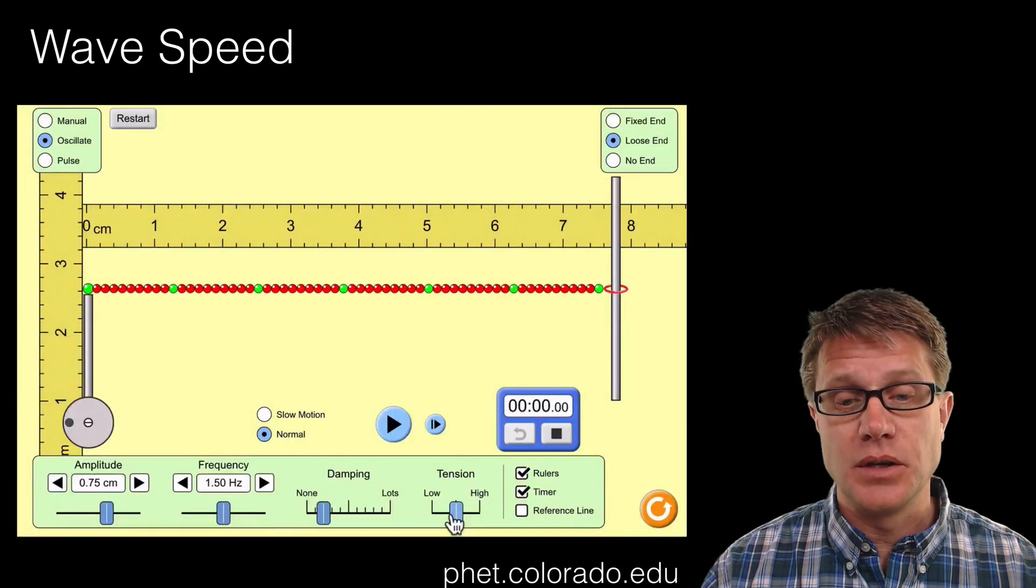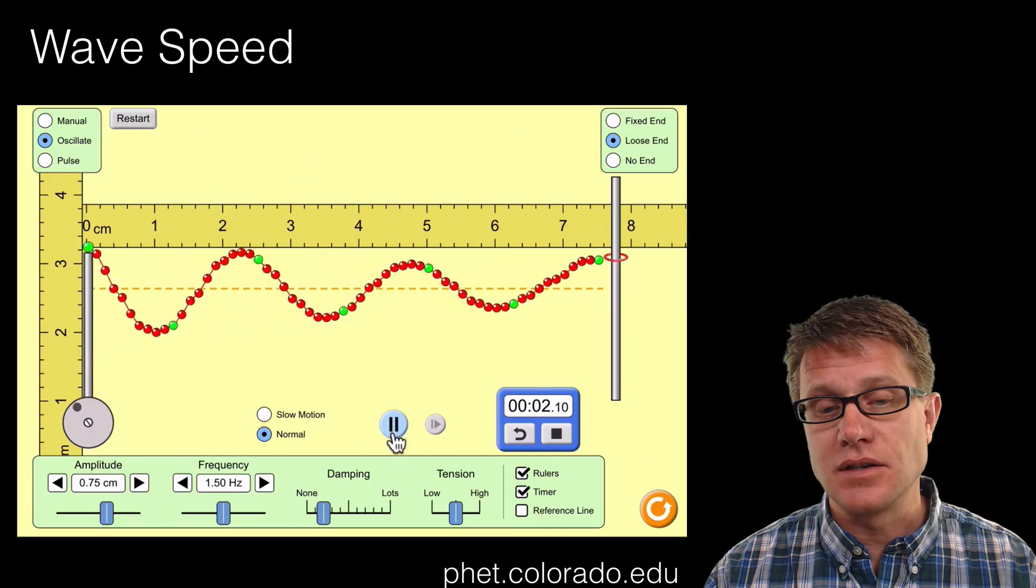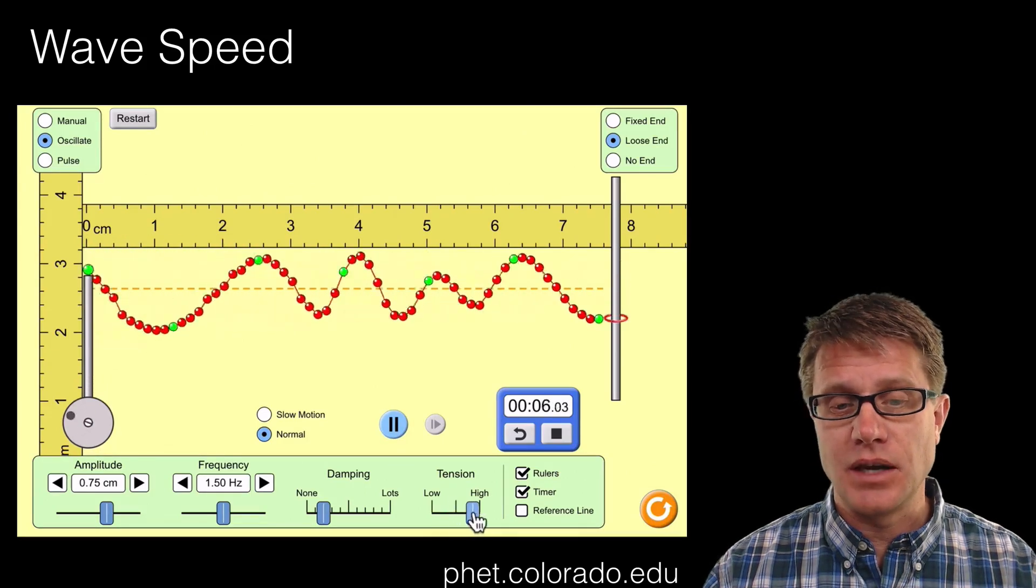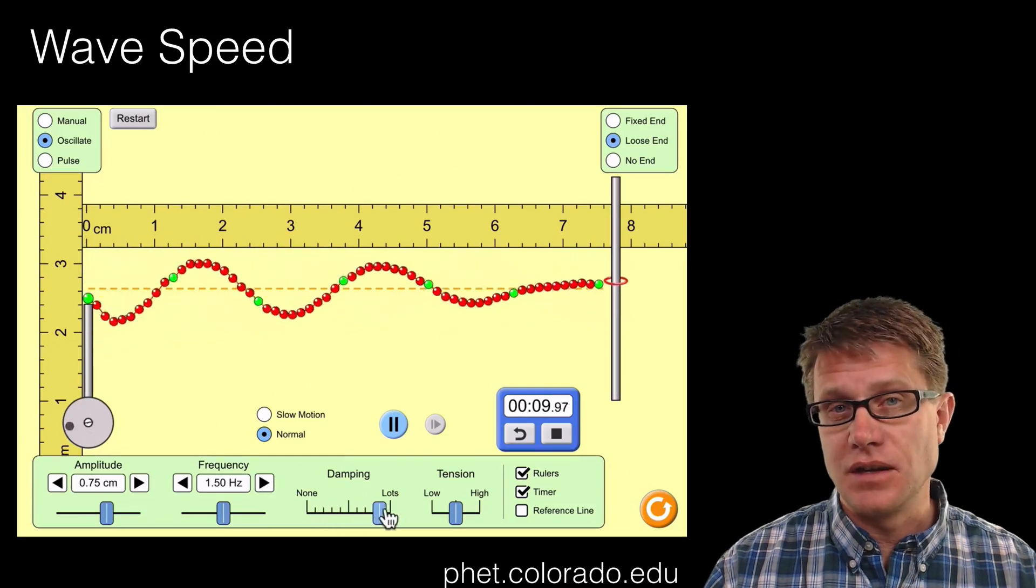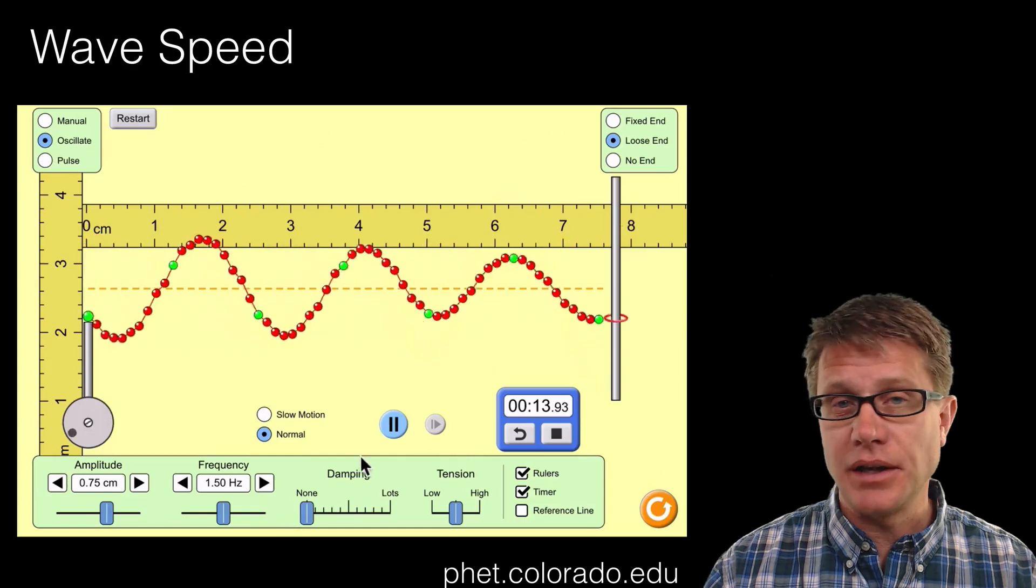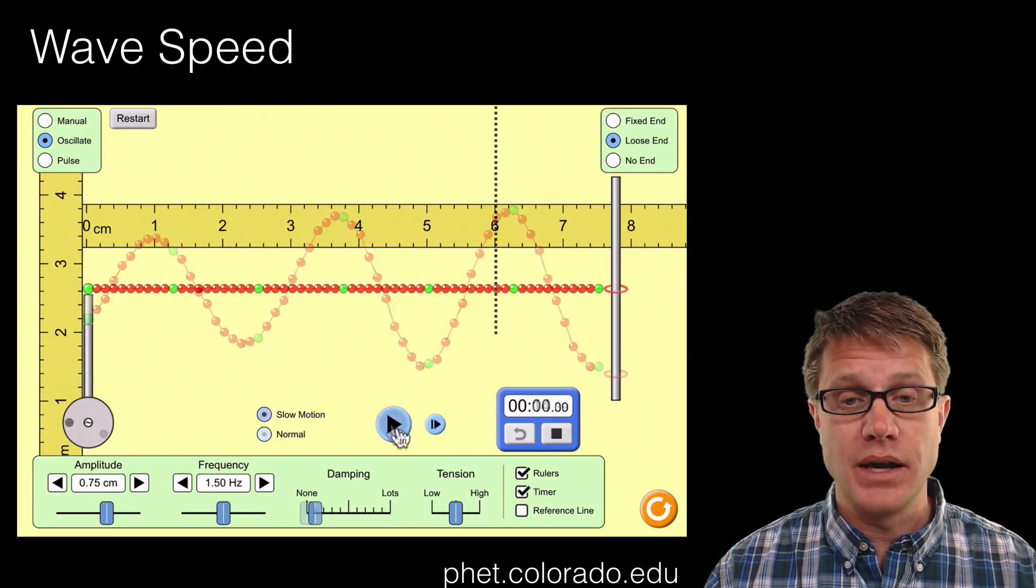And so let's take a look at that wave speed for a second. We'll just do this qualitatively. So what I'm going to do is start some waves in this simulation, and then I'm going to play around with the tension. Watch what happens as I make it less tense and then more tense. I could also affect how much of it is being dampened by the medium itself. So you can see that I can play around with the medium itself and vary the speed of the waves.